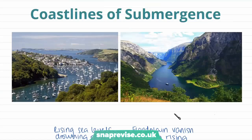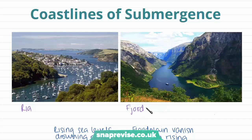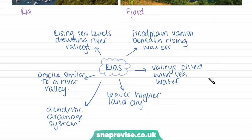In relation to sea level change, we get different types of coastlines depending on whether the coastline has been submerged by water or is an emergent coastline where water level has decreased. Looking at coastlines of submergence, we can see photographs of a ría and a fjord. They may look similar but have very different characteristics. Rías are very similar to fjords but form specifically when rising sea levels drown river valleys — they are essentially drowned river valleys, and that is what distinguishes a ría from a fjord.